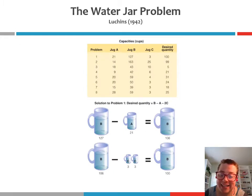The next problem I asked you guys to solve is something called the water jar problem. Basically, the objective with this problem is to end up with the desired quantities specified in the rightmost column using only the three jars that you're given.